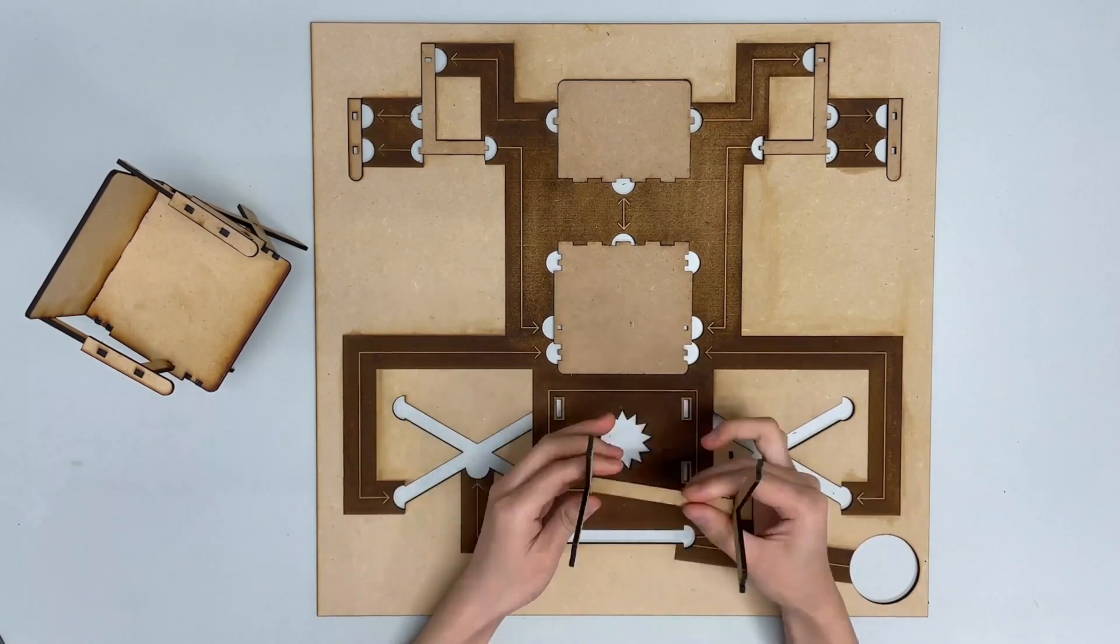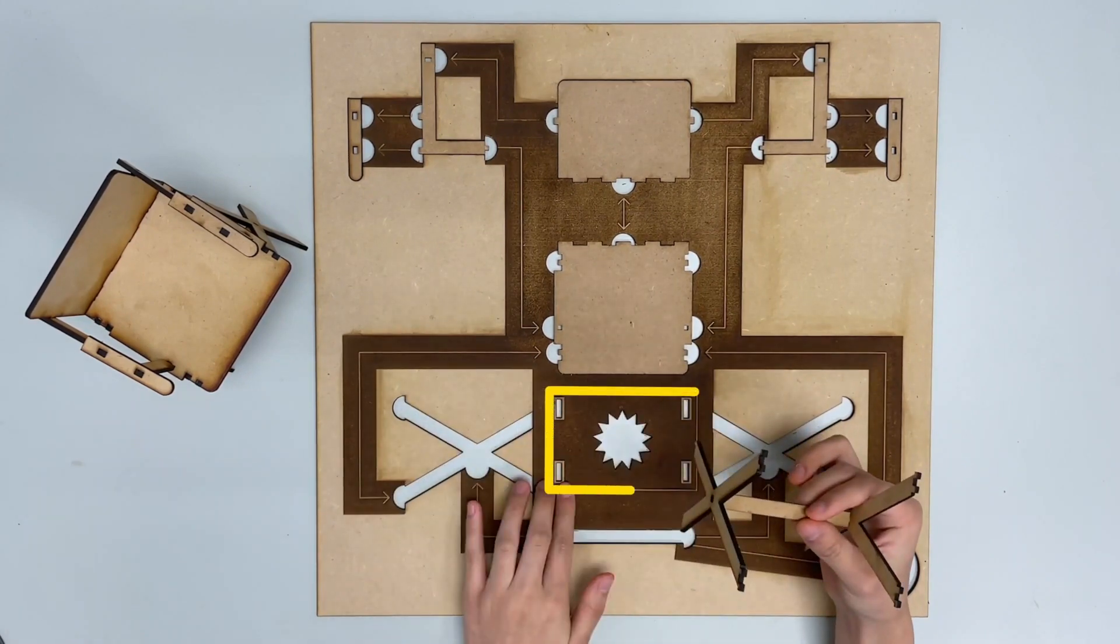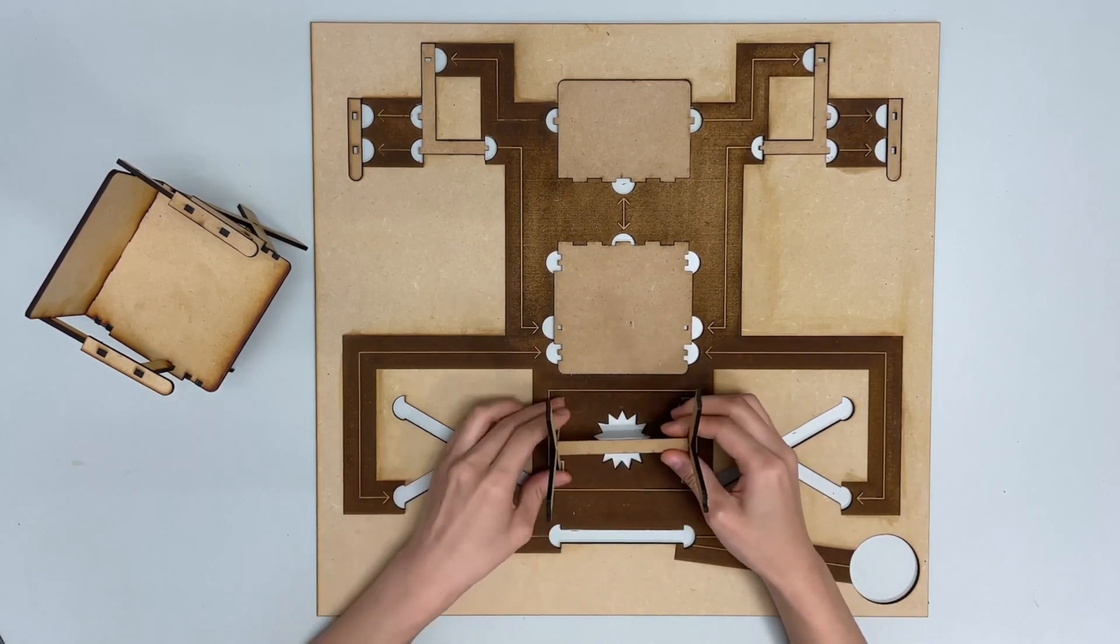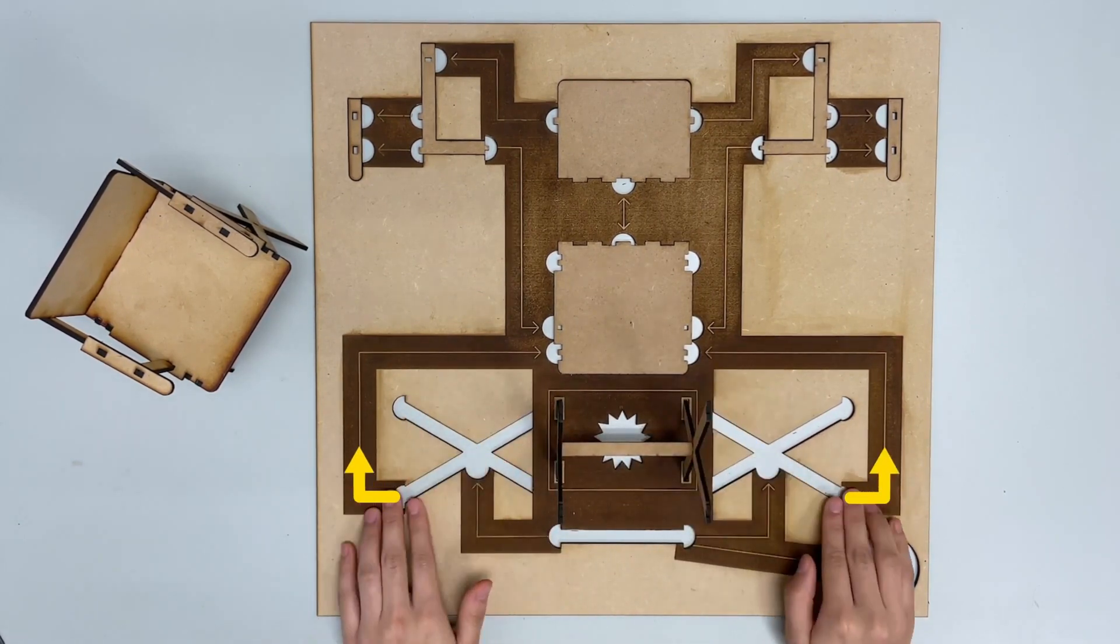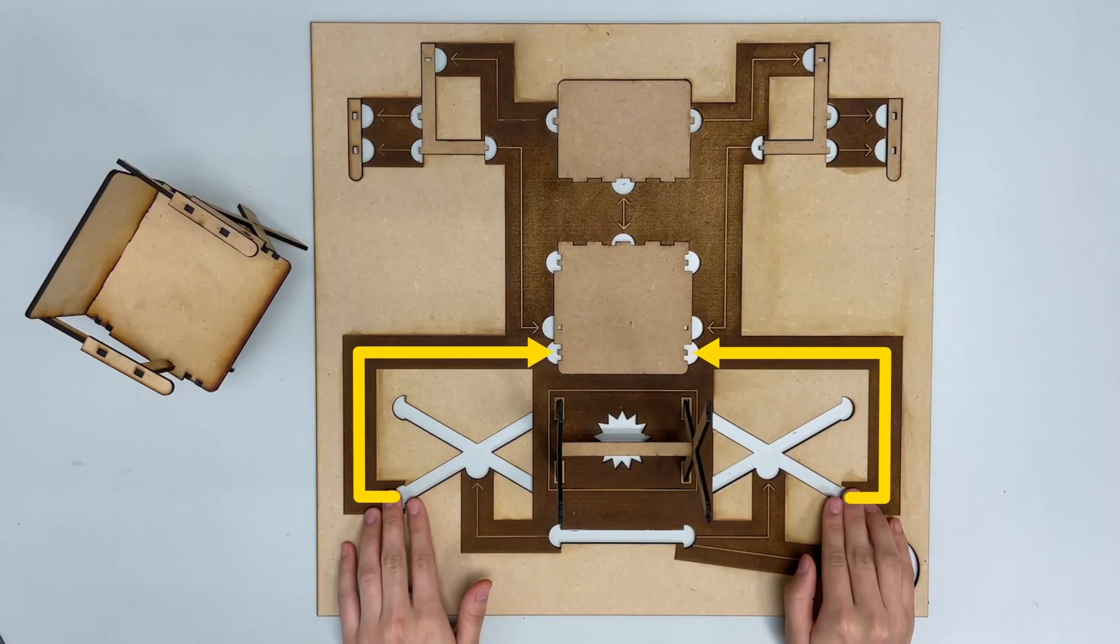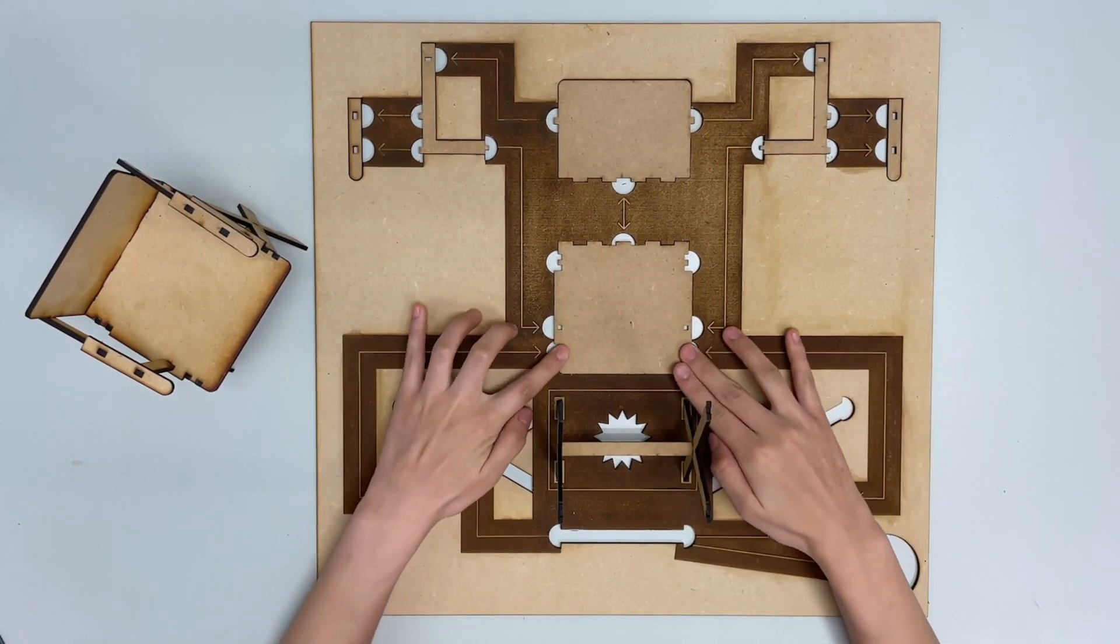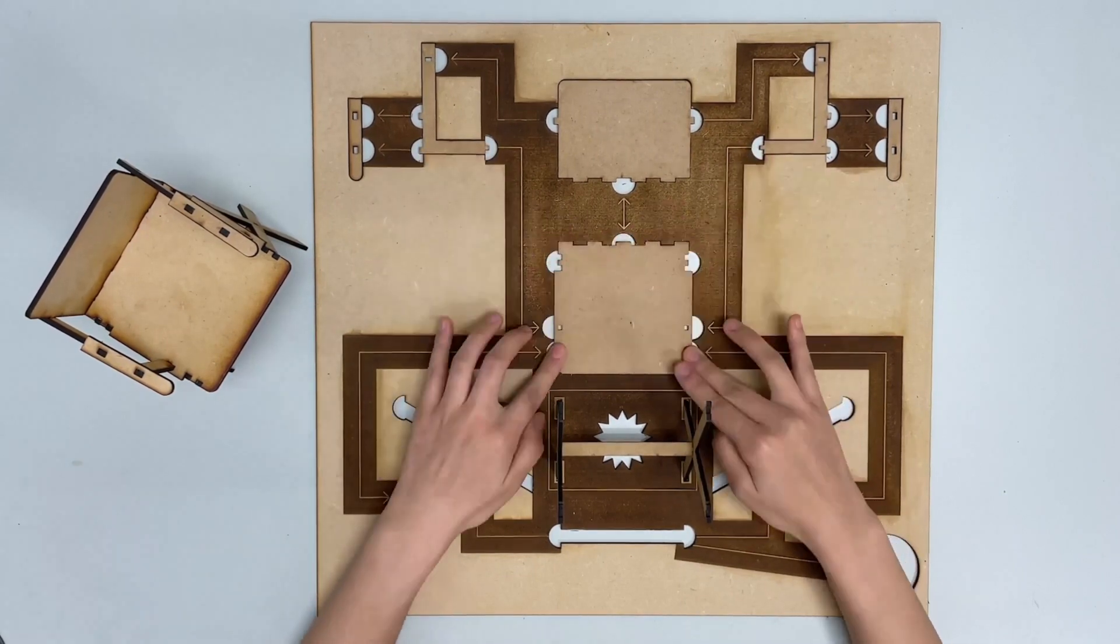The mid assembled model can be placed into the ground support to enhance stability. The user then follows the arrows to find the next component and joints to assemble. With the ground support, the user can easily assemble the components.